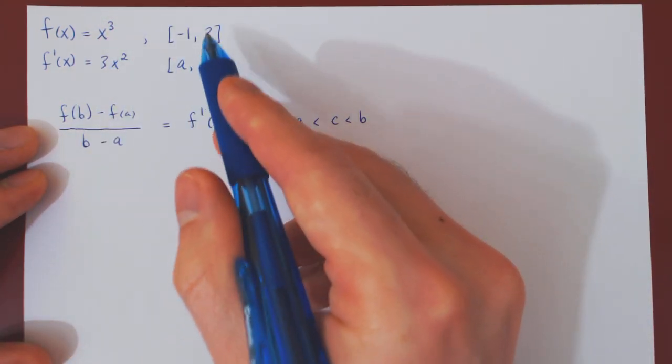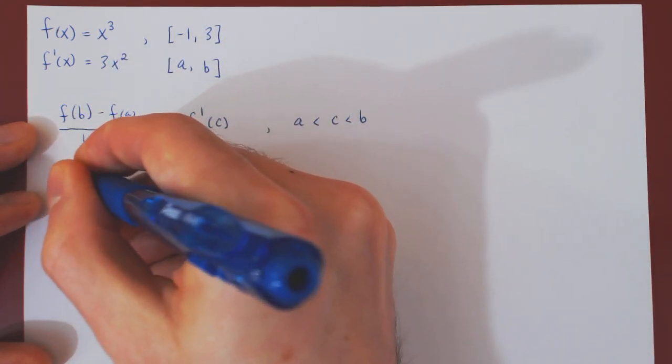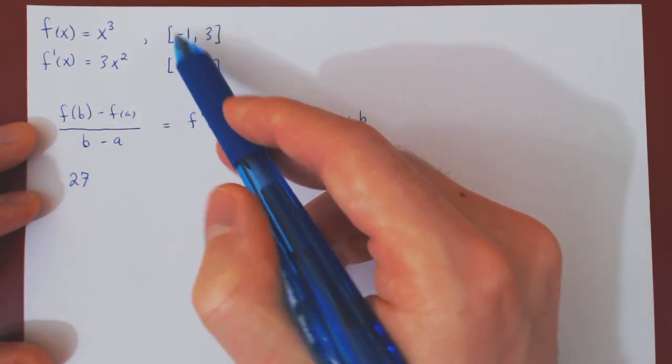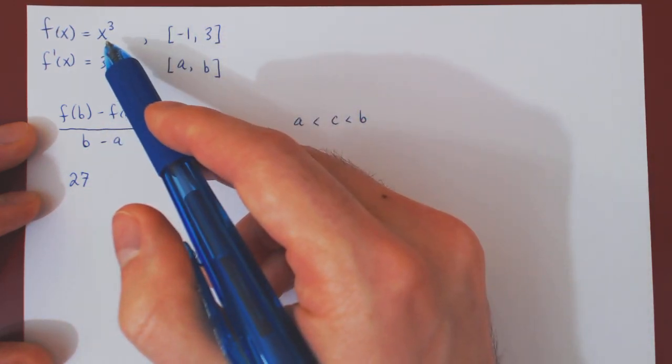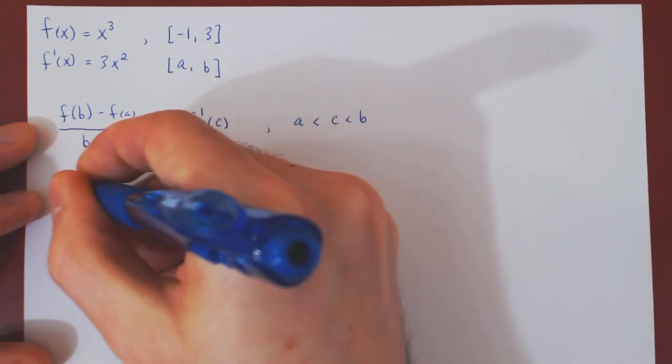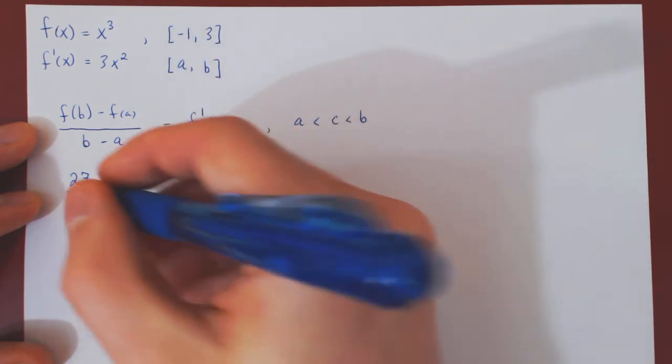Now we can replace, so f of b will be 3 cubed, which is, of course, 27, minus f of a, negative 1 cubed, which is negative 1, so negative negative 1 is positive 1, over b minus a, 3 minus negative 1 is 3 plus 1, 4.